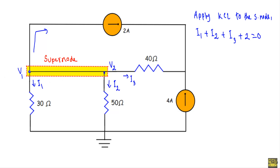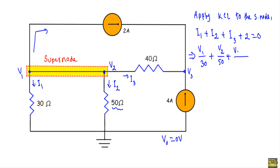I1 is the current flowing through the 30-ohm resistor. The voltage difference across the 30-ohm is V1 minus V0, so I1 = V1/30. I2 is the current flowing through the 50-ohm resistor; the higher voltage is V2, so I2 = V2/50. I3 is the current flowing from node two toward node three — assuming node two is at higher potential — so I3 = (V2 minus V3)/40. Therefore: V1/30 + V2/50 + (V2 minus V3)/40 + 2 = 0.